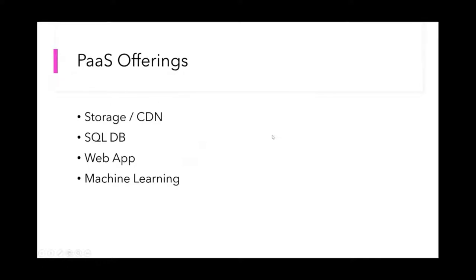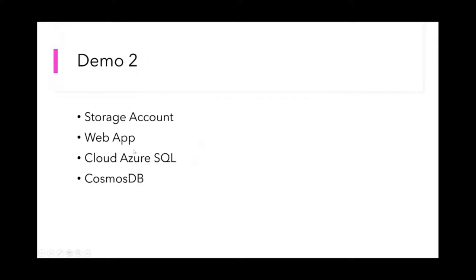Looking at Azure PaaS offerings — platform as a service, things used to build applications — Microsoft's key service is the storage account, where you can upload data or attach a content delivery network to serve web pages, JavaScript files, and images. You can also spin up an Azure SQL database, a web app, and there's a whole machine learning platform. Demo two will cover the storage account, web app, cloud SQL, and Cosmos.